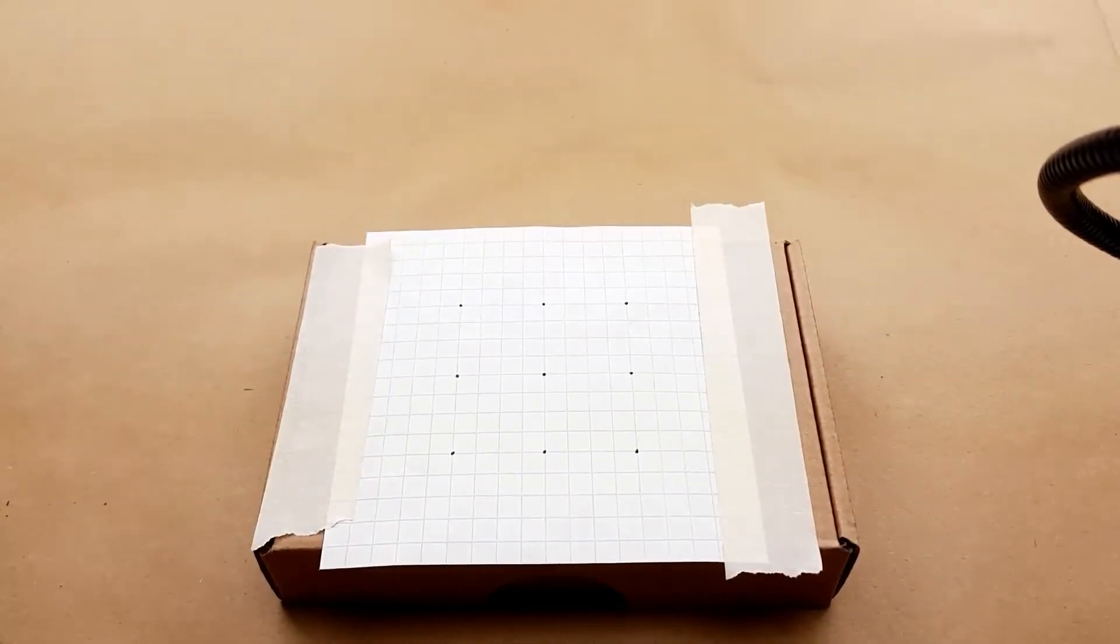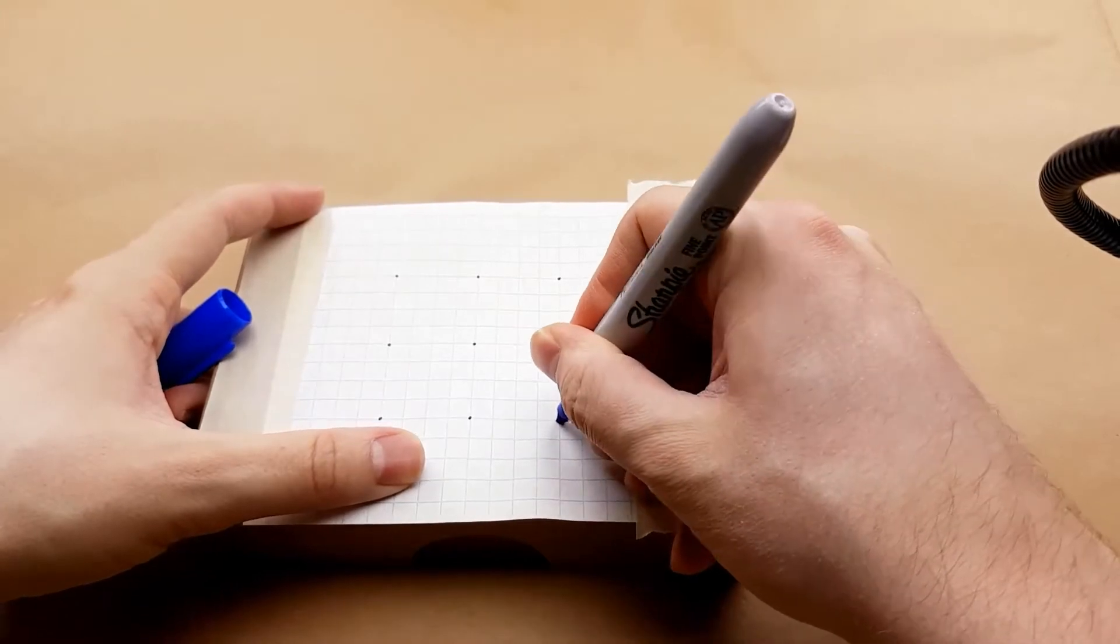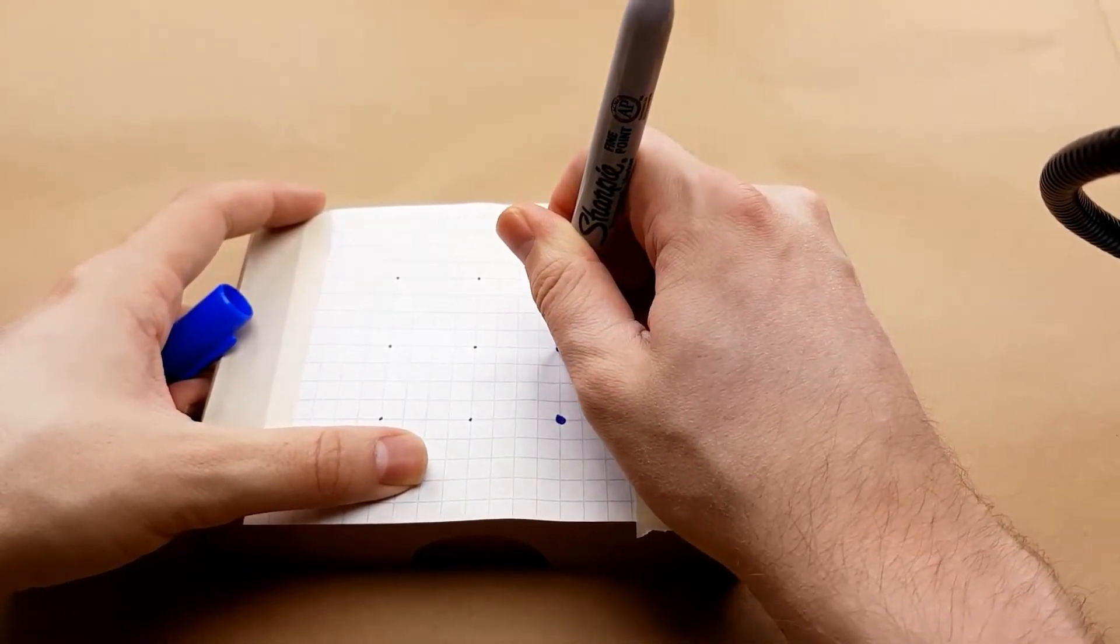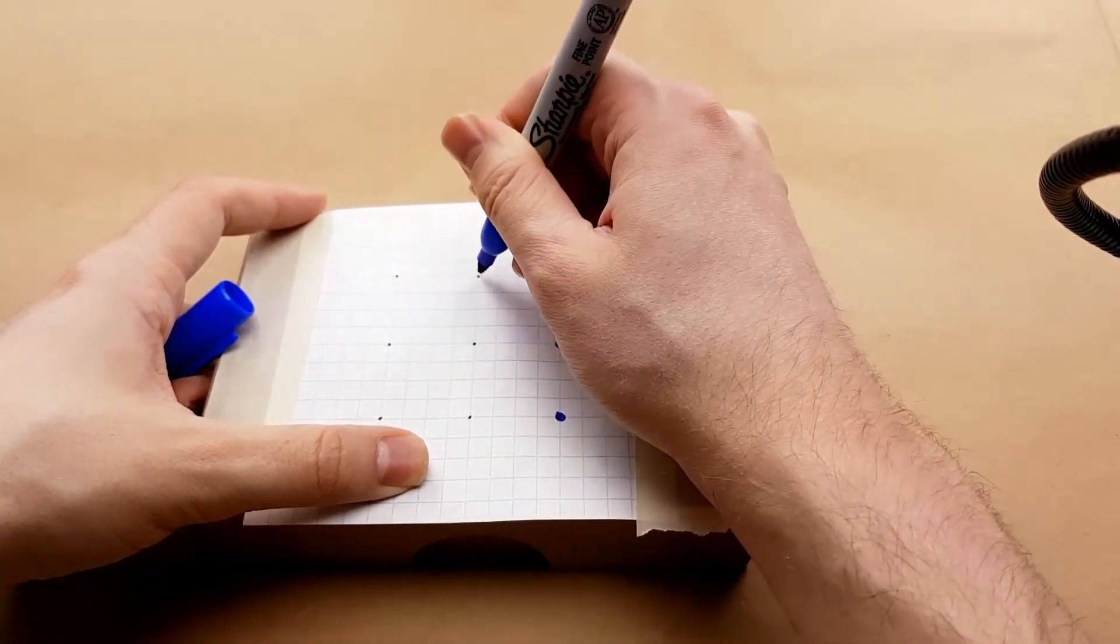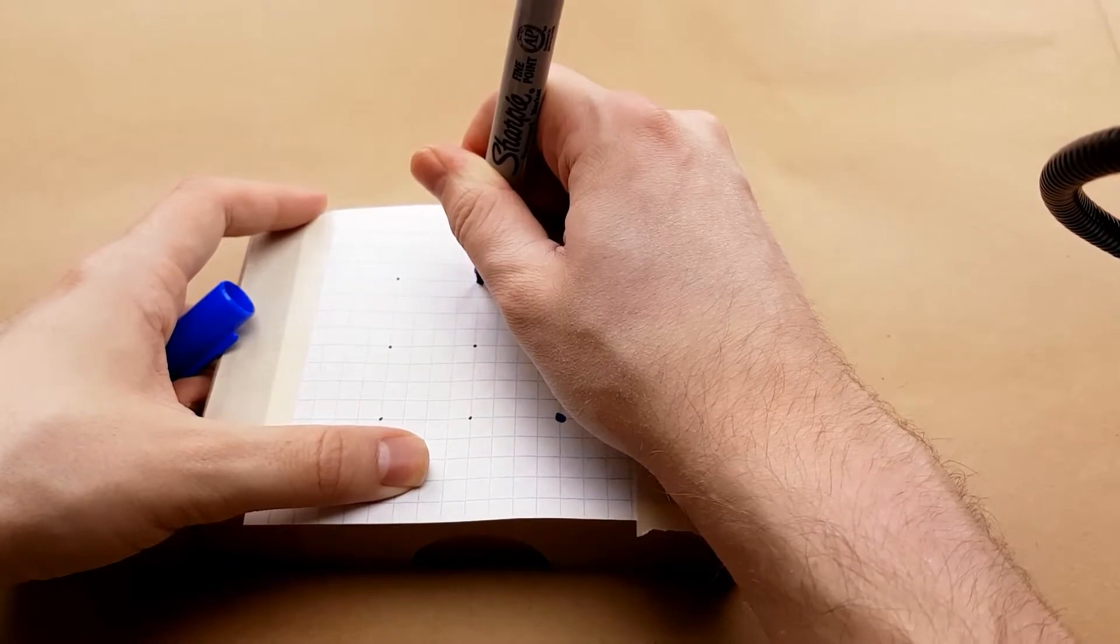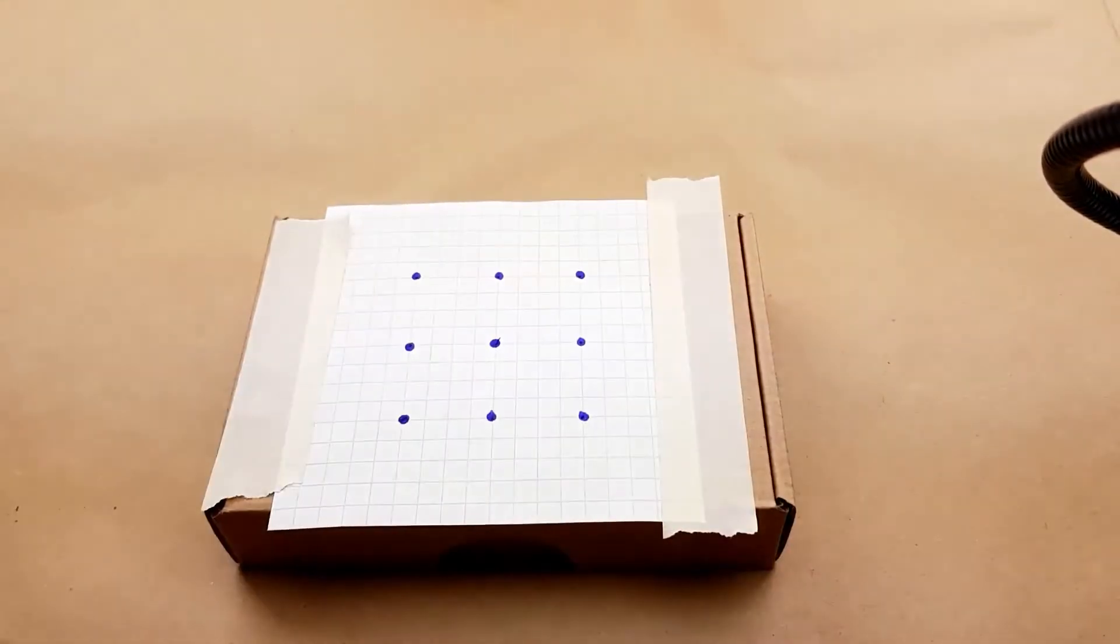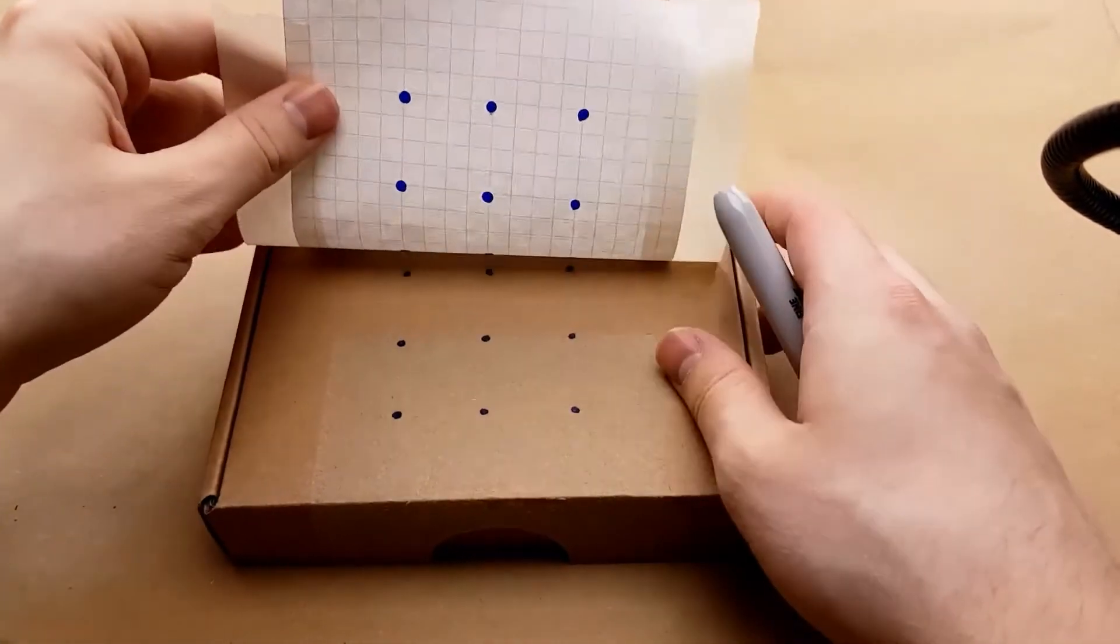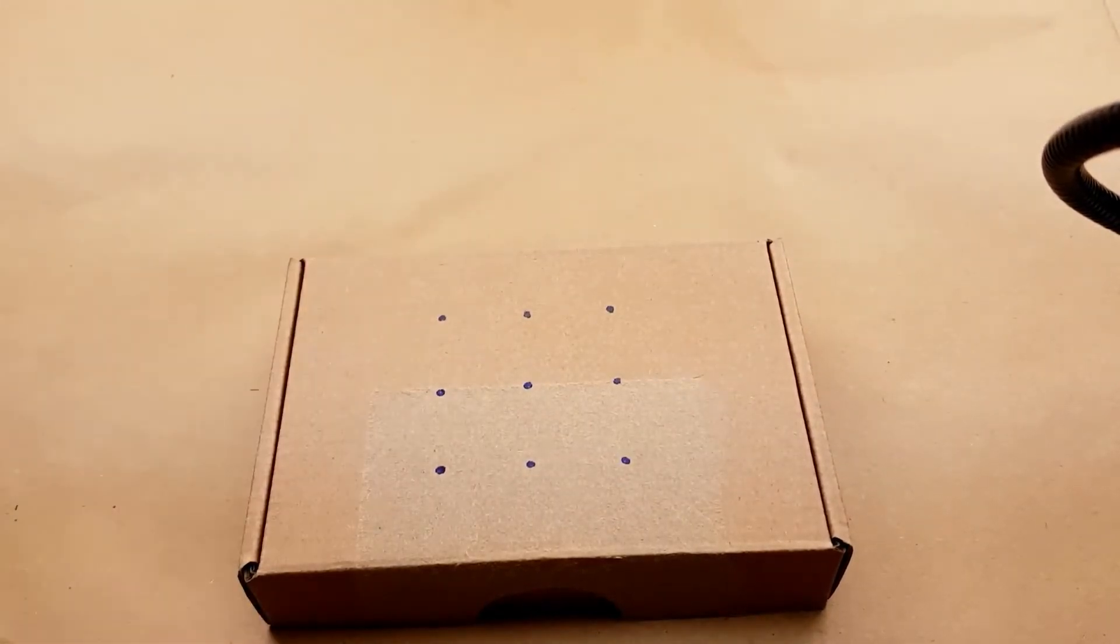Now we want to mark this. I'm just going to use a Sharpie marker, make sure it soaks through the paper to the cardboard hopefully. Now you don't have to be super ridiculously precise. Check and see if those went through. Yep. So now the box is marked with where we need to poke holes.